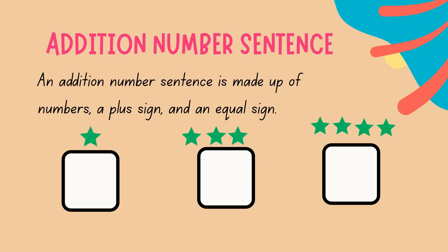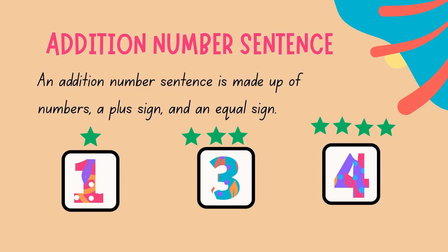An addition number sentence is made up of numbers, a plus sign, and an equal sign. The numbers are 1, 3, and 4. Can you see the blue color? That looks like a cross — it is a plus sign. Look at the red color — it is called an equal sign.